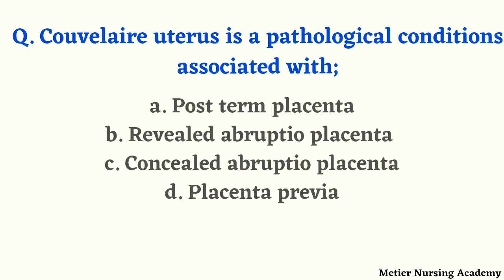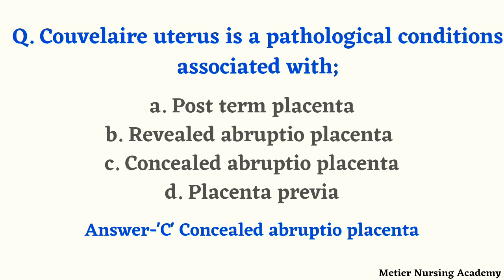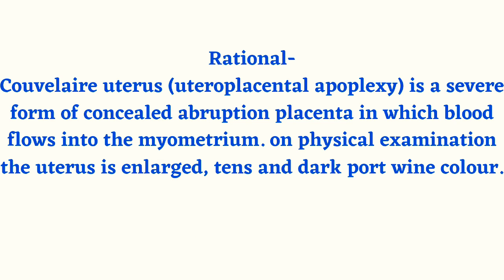The first question: Couvelaire uterus is a pathological condition associated with — post-term placenta, revealed abruptio placenta, concealed abruptio placenta, or placenta previa? The right answer is option C, concealed abruptio placenta. Couvelaire uterus, also called uteroplacental apoplexy, is a severe form of concealed abruptio placenta in which blood flows into the myometrium. On physical examination, the uterus will be enlarged, tense, and dark port-wine color.